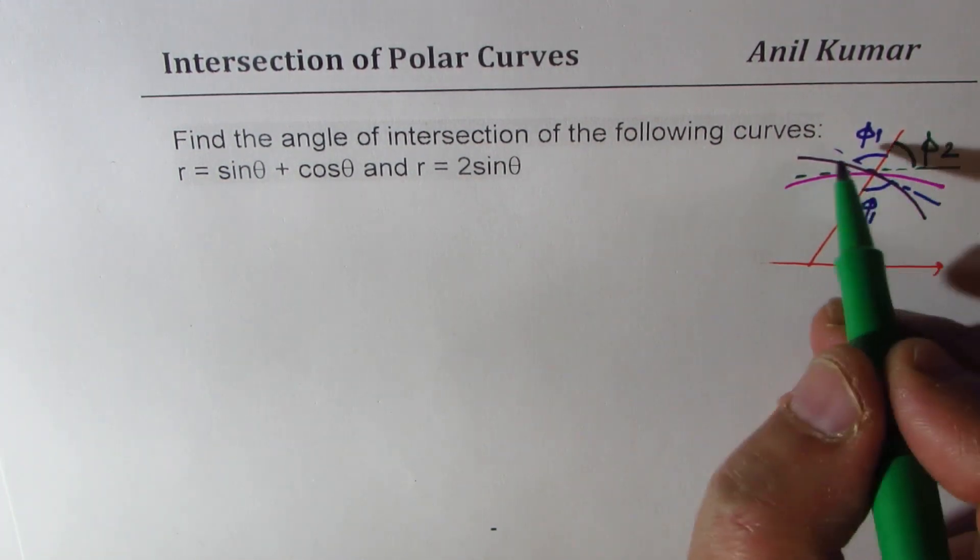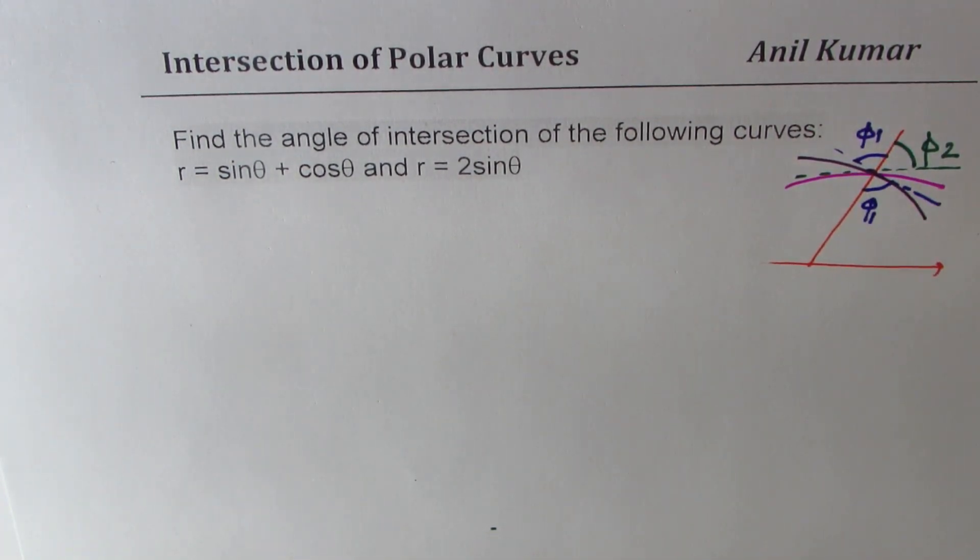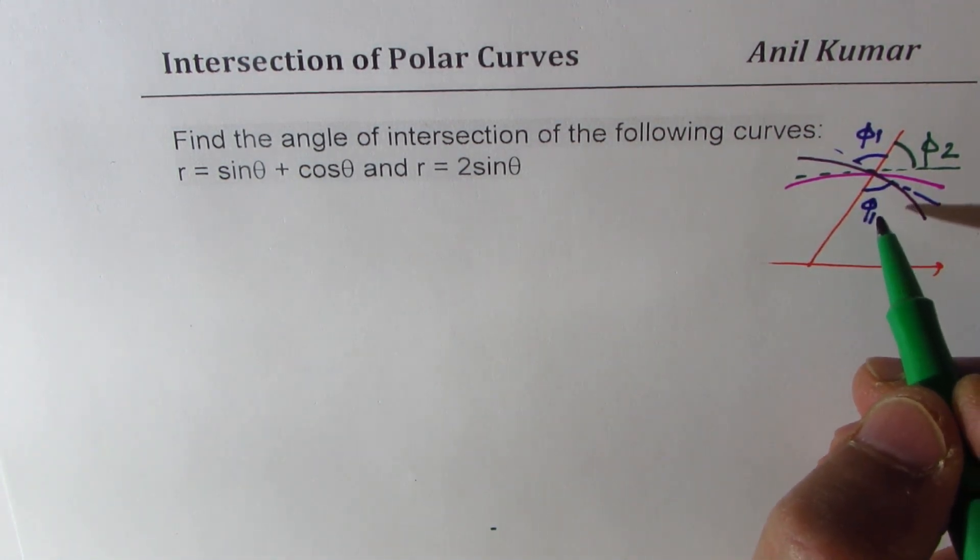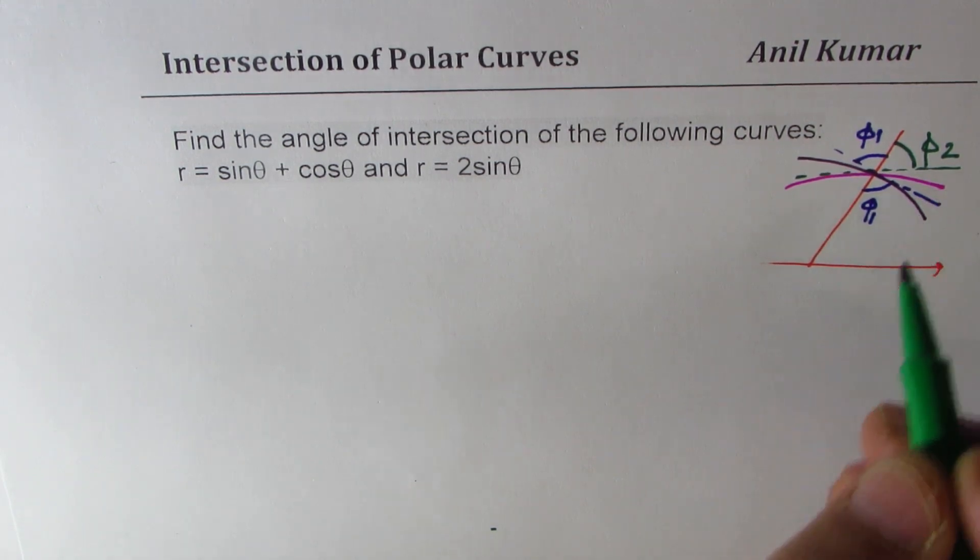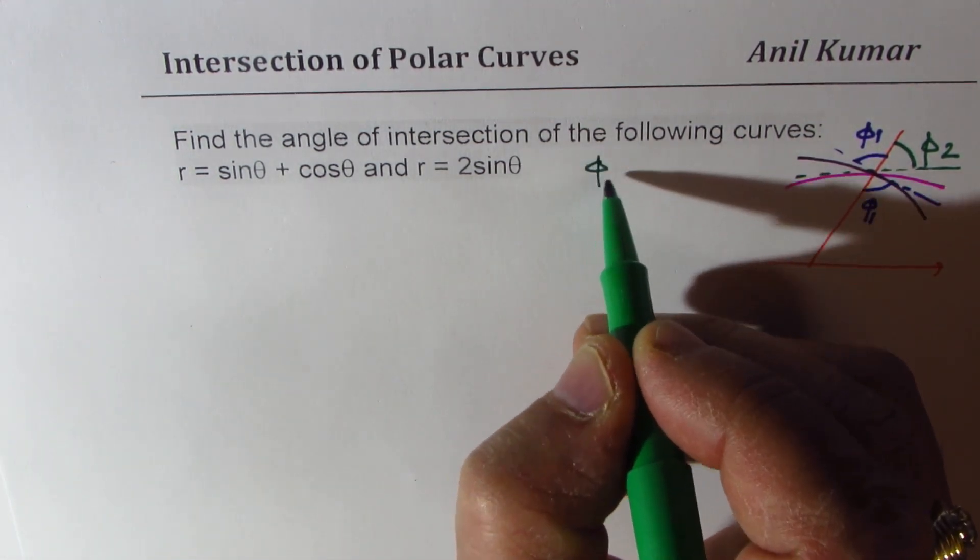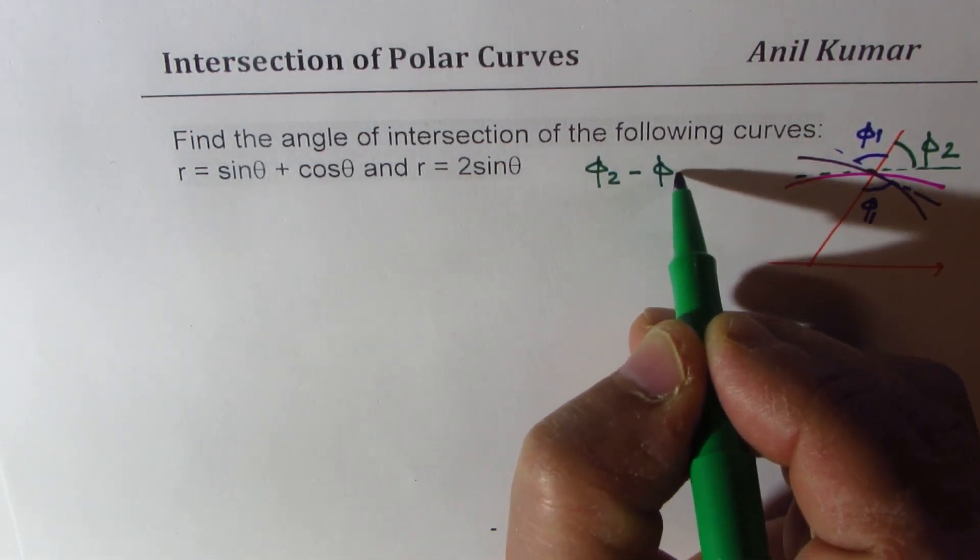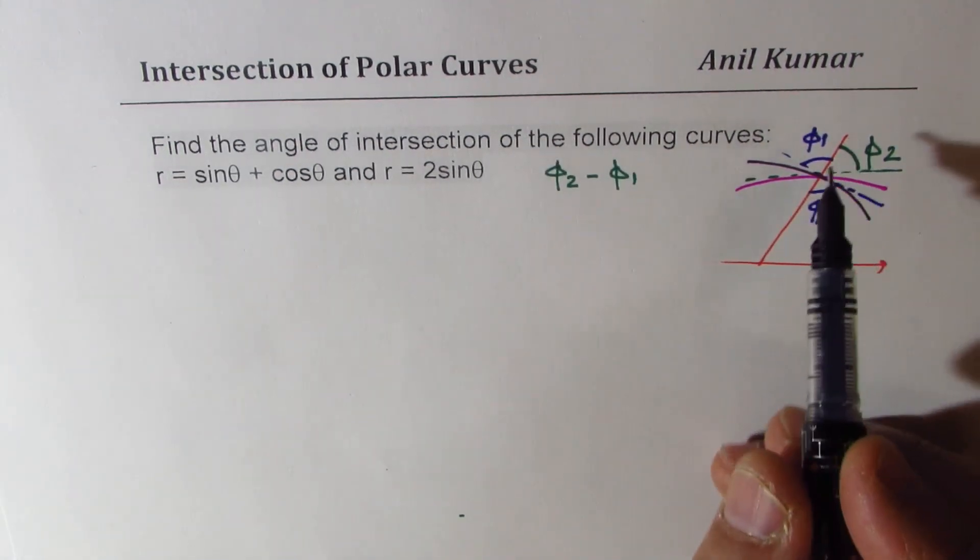So angle phi 2 minus phi 1 will give us the solution. So that is what we are looking for. We are looking for phi 2 minus phi 1, the angle between. Now to find these angles,